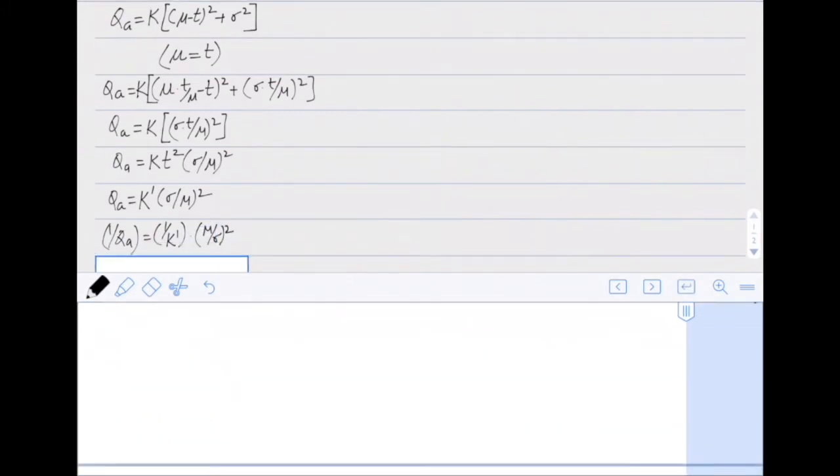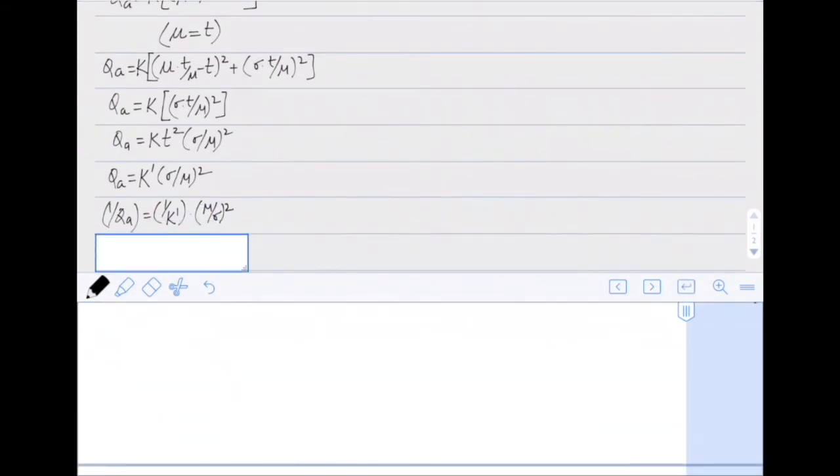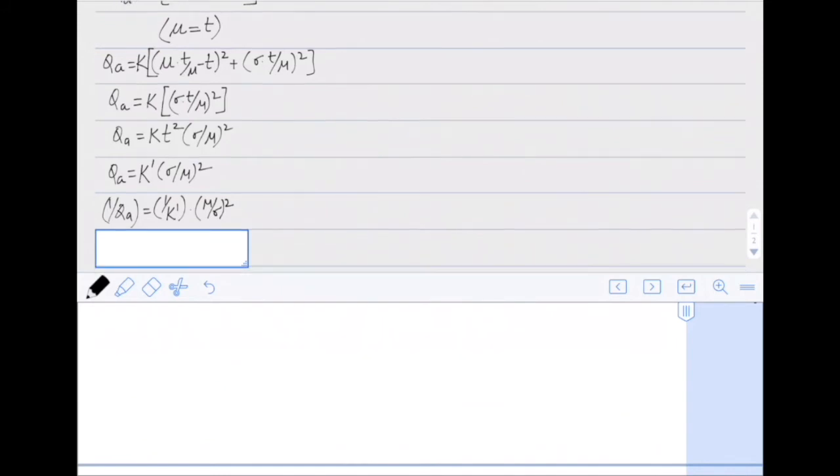In this equation, mu is the mean value of the signal and sigma is the variation in the signal due to the noise factors. When we maximize 1/QA, this maximization shall lead us to an optimum signal to noise ratio.